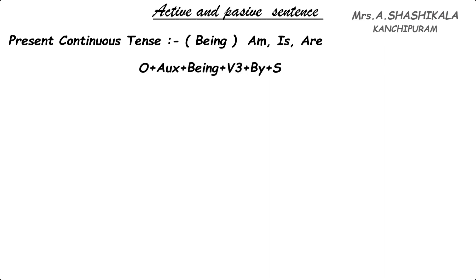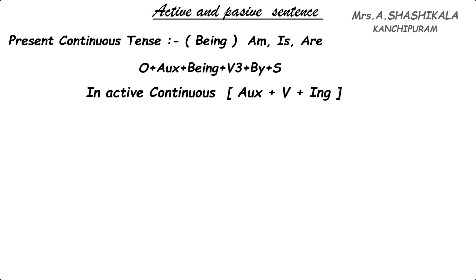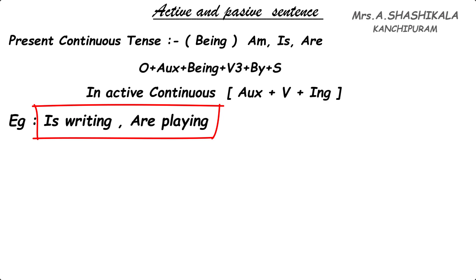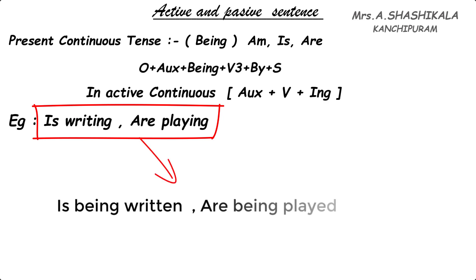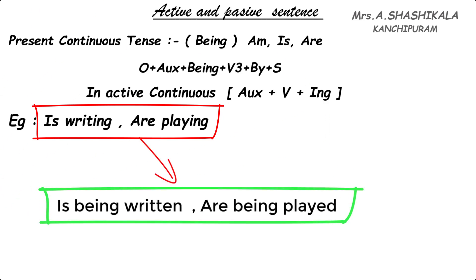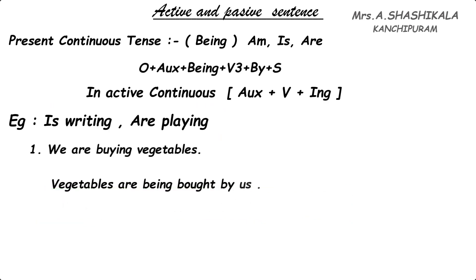In the active continuous tense it will be like auxiliary plus verb plus ing. For example, we can say 'is writing' or 'are writing'. When it changes to passive: 'is being written' or 'being played'. See the first sentence: 'We are buying vegetables.' Here 'we' is the subject, 'are buying' is the verb, and 'vegetables' is the object — an SVO pattern.